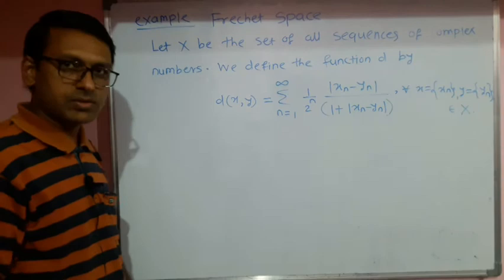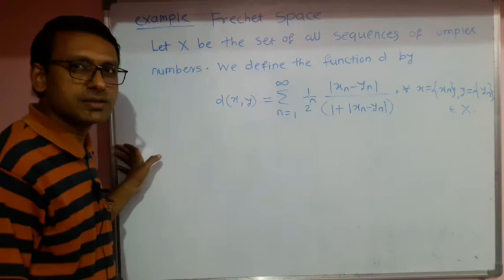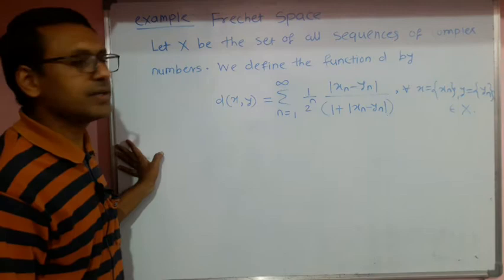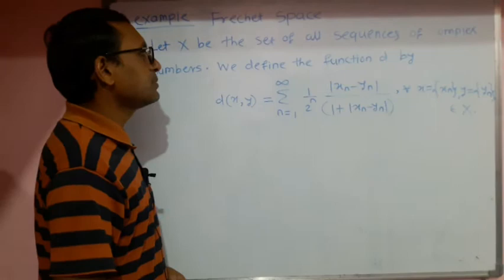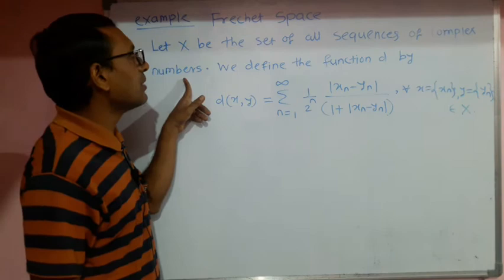Good afternoon students. In this metric space paper, we see one more example — the example of a Fréchet space. This mathematician Fréchet introduced the concept of a metric space. We see here this example: let X be the set of all sequences of complex numbers.